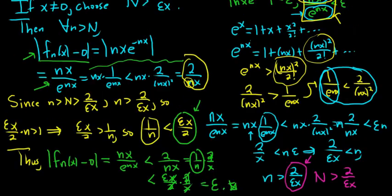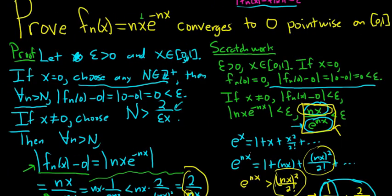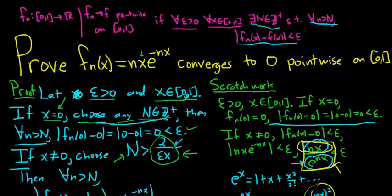We've shown that the sequence of functions converges pointwise to 0. To reiterate: start with epsilon greater than 0, pick your x, take cases. If x is 0 choose any N; if x is not 0 choose N greater than 2 over (epsilon·x) — this N depends on x, which is why we have pointwise rather than uniform convergence. It turns out this sequence does not converge uniformly to 0 on this interval — maybe I'll make a video for that another day. I hope this video has been helpful.